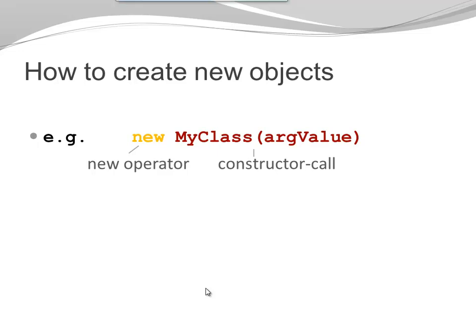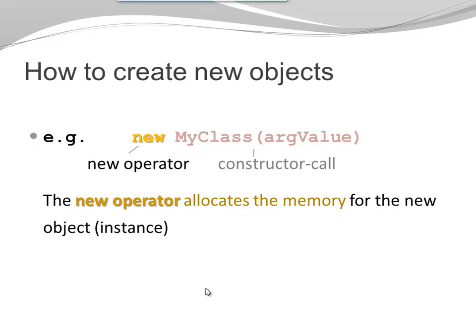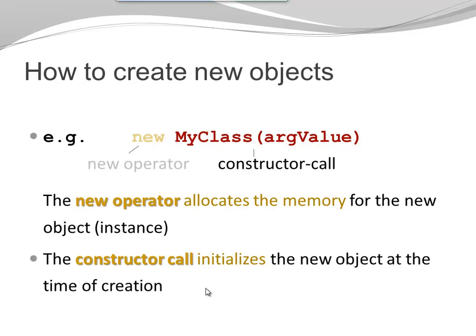Now, let's have a look on how to create a new object. When you create a new object, you're using the new operator and a constructor call. The new operator allocates the memory for the new object. It allocates just the right size that is required for the specific object that is created. The constructor call initializes the new object at the time of creation. Constructors initialize, they give a value to the fields, but they can only be called when the new object is created. If you want to change the field values later on, you can no longer use a constructor. You need a method, for example, a setter, or another method that changes field values.